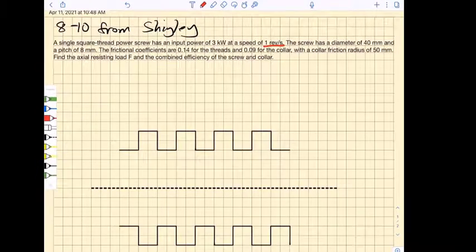When we see a problem like this, the first thing we have to do is understand all the available information. We know it has a pitch of 8 millimeters, so p equals 8 millimeters. It is a single thread, so the lead equals one times the pitch.